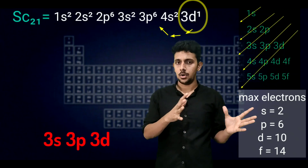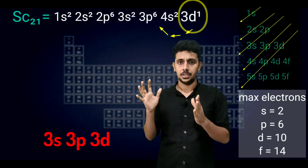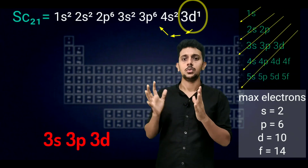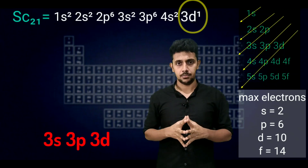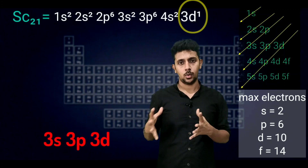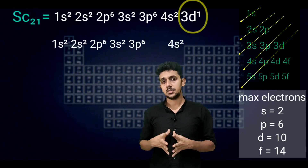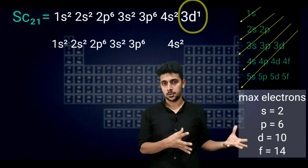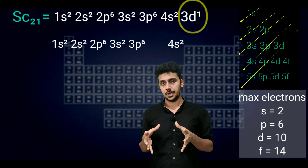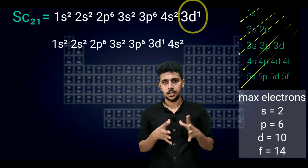The order is correct. The configuration of scandium is 1s2, 2s2, 2p6, 3s2, 3p6, 4s2, 3d1. So we get a 3d electron at the end.